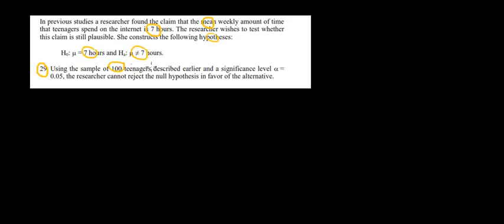Using the sample of 100 teenagers described earlier, so in the previous question, and a significance level of 0.05, do we reject or do we not reject the null hypothesis? Let's draw this on the distribution and we're going to use some numbers from the previous question that we found.